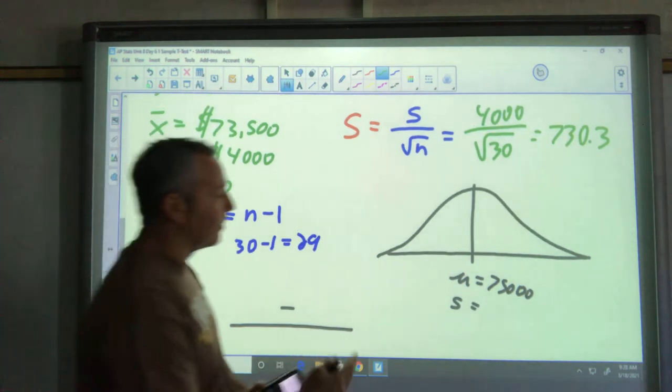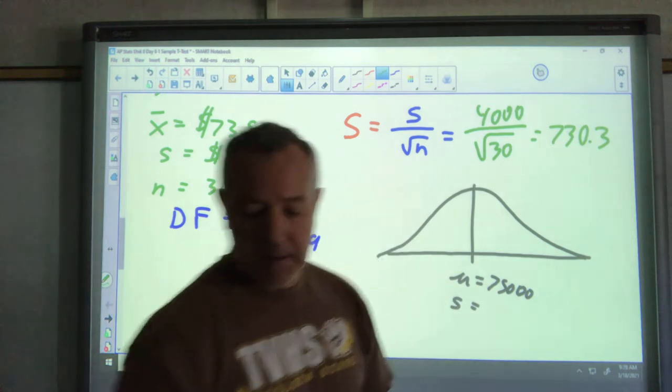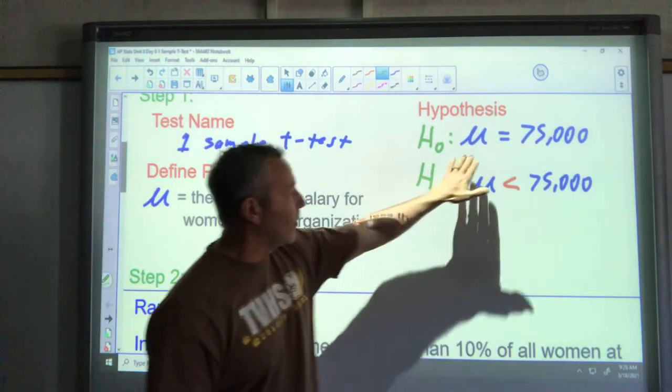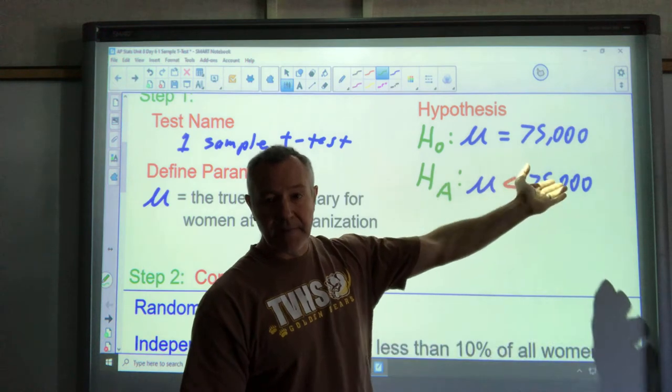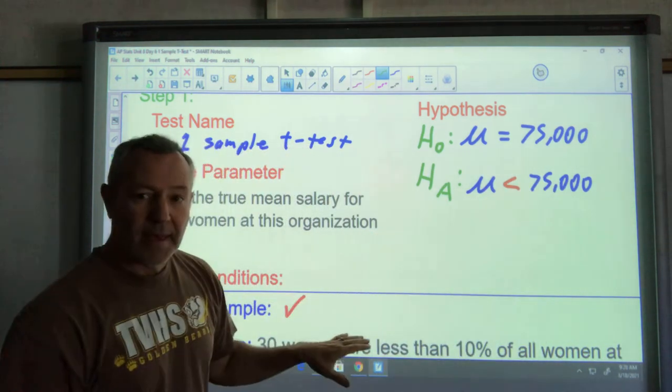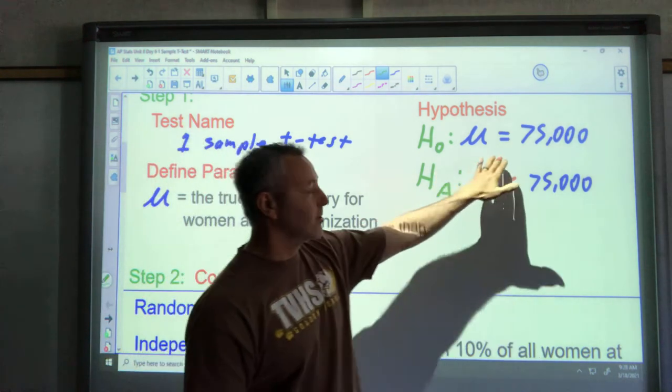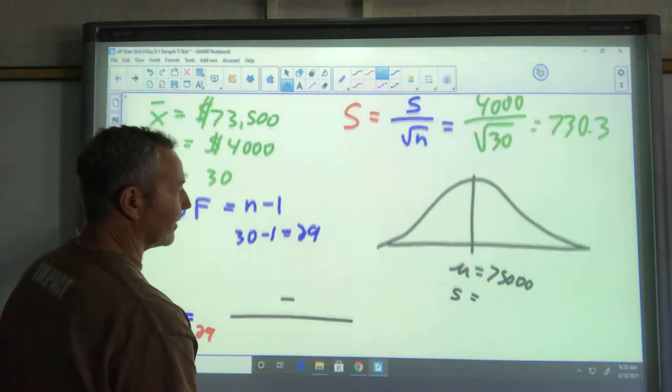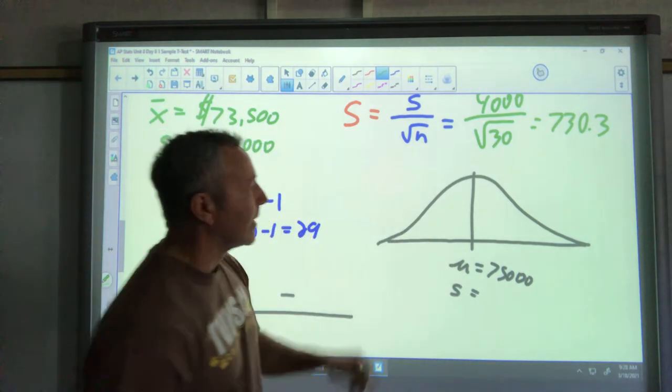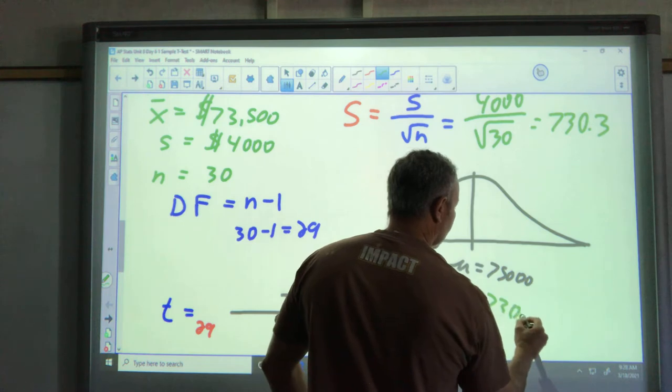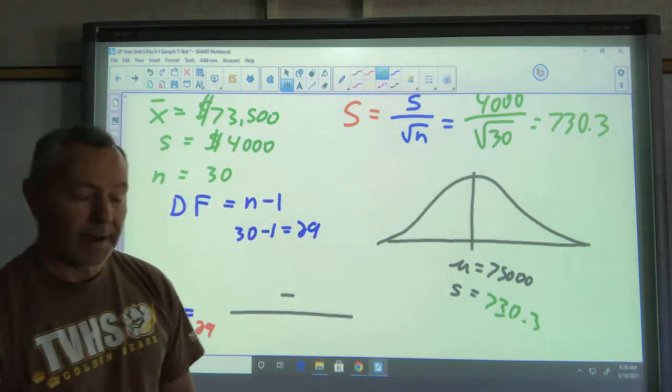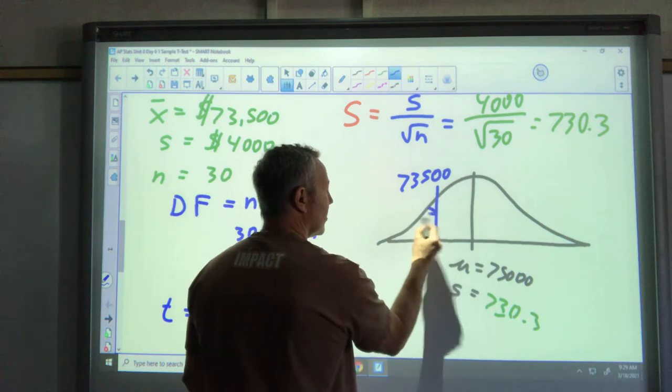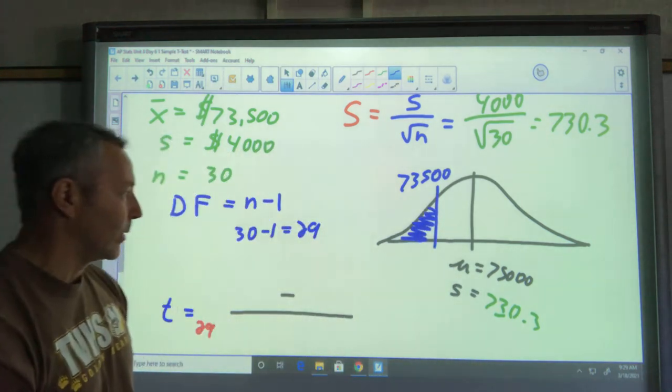That's the basis of our picture here. The center of the distribution is supposed to have, if it was the same, remember we're operating under the assumption that the null hypothesis is true always. So we're operating as if the women's salary is 75,000, seeing how likely it is that we could get our sample and have a result of 73,500 if that was true. Down here for our distribution, the mean salary is supposed to be 75,000, our standard deviation here is now 730.3, and we want to know the likelihood of what we found, 73,500 or less.